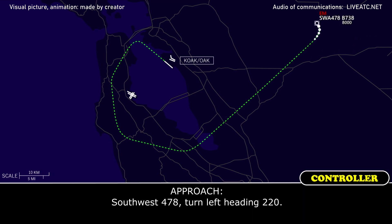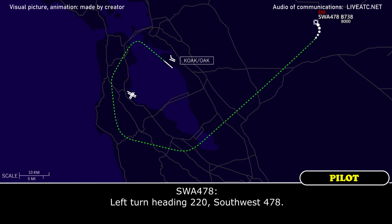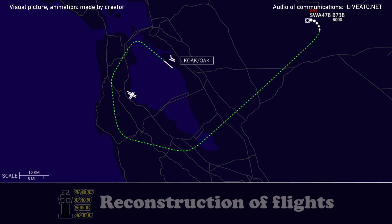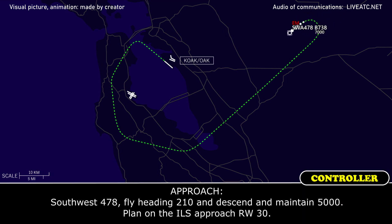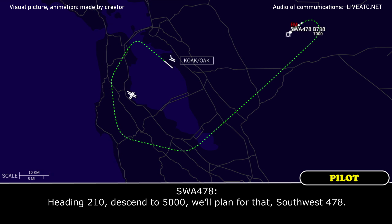ATC: Southbound 478, turn left heading 220. Southbound 478: Left turn heading 220, southbound 478. ATC: Southbound 478, fly heading 210 and descend and maintain 5,000. Southbound 478: We'll plan for that, southbound 478.